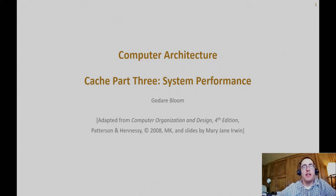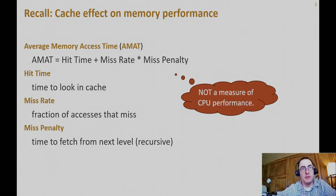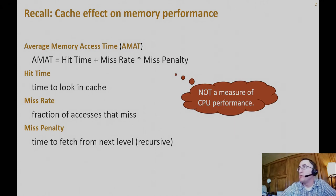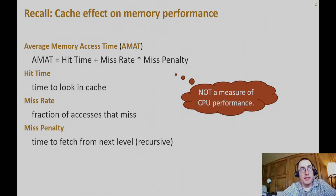We're going to try to tie together system performance with cache performance. Remember we talked about metrics for cache performance, specifically AMAT — average memory access time — and that's the hit time plus the miss rate times the miss penalty.